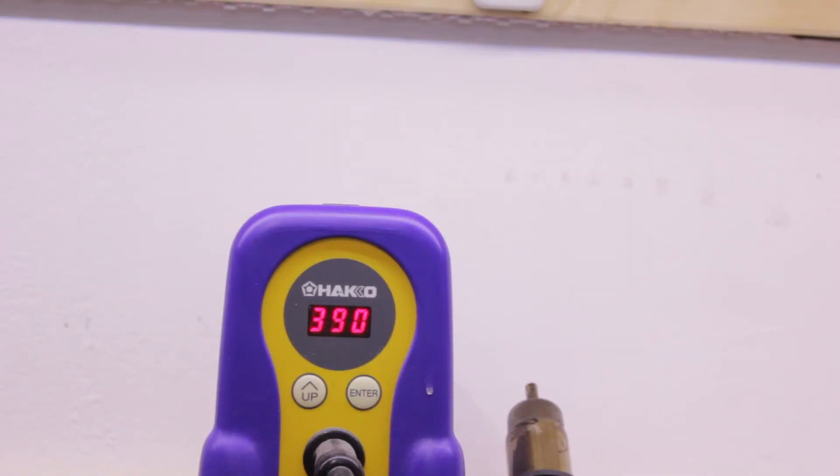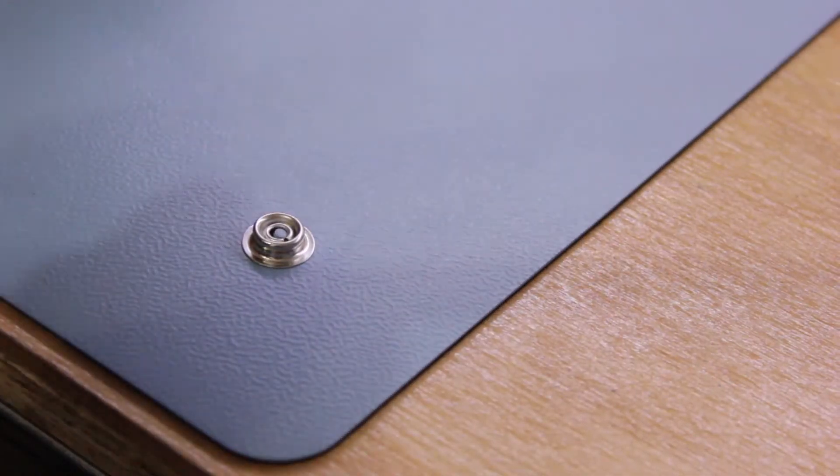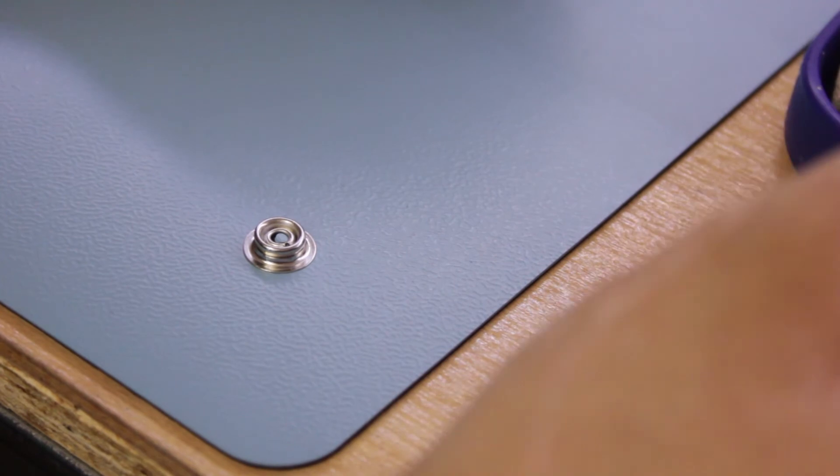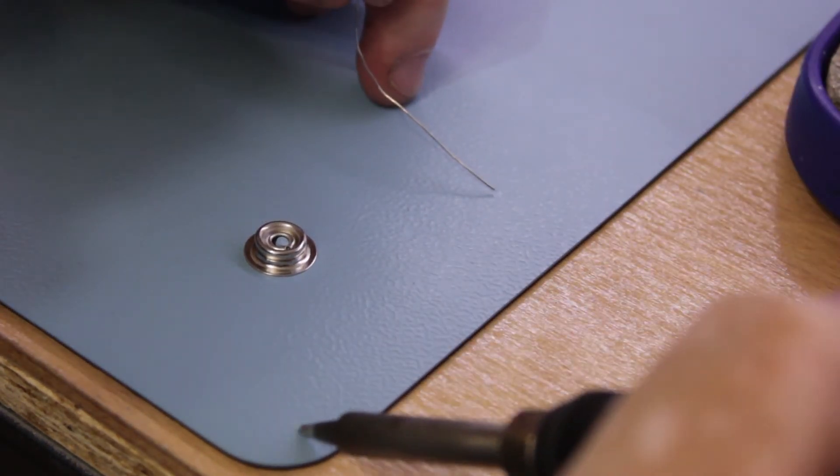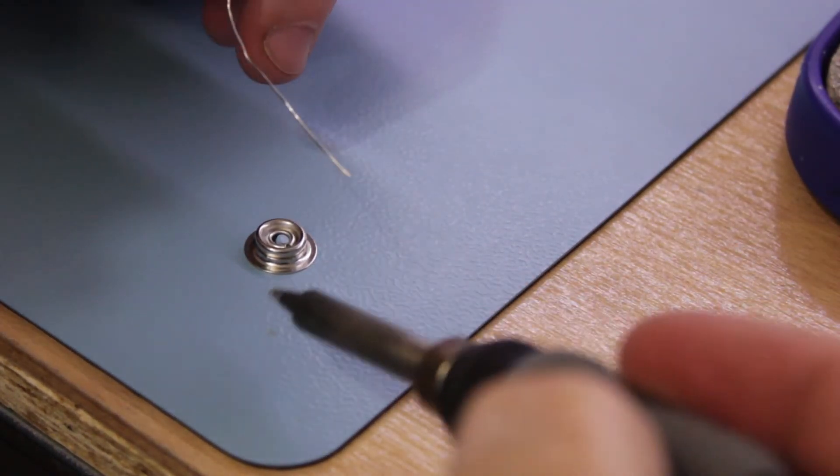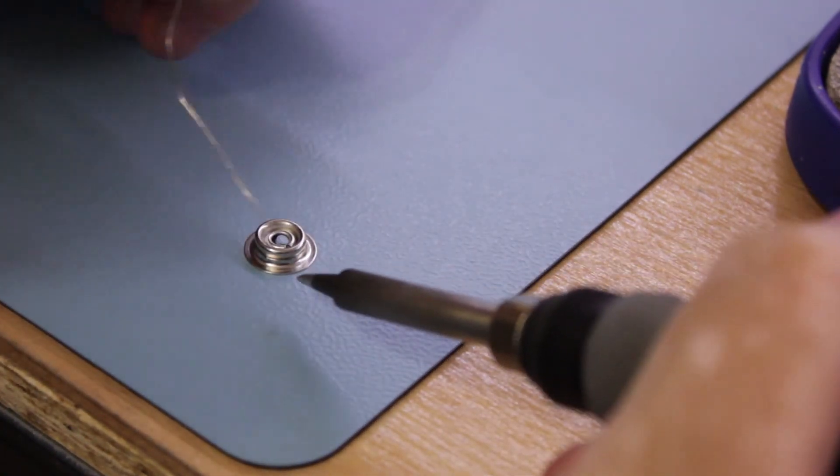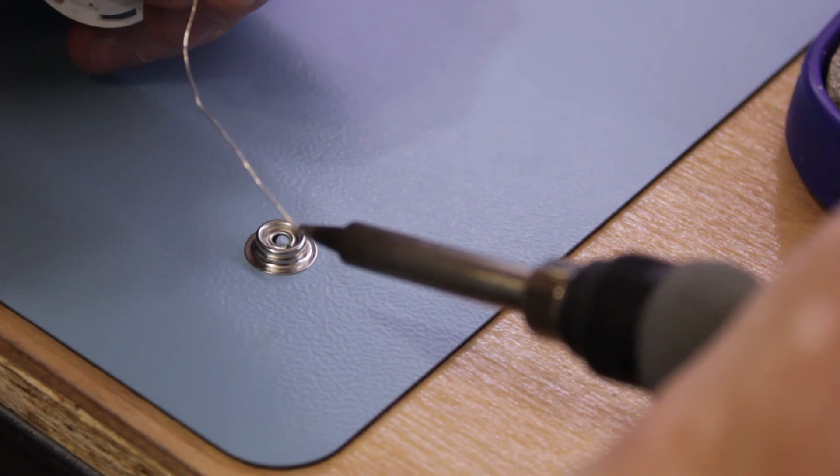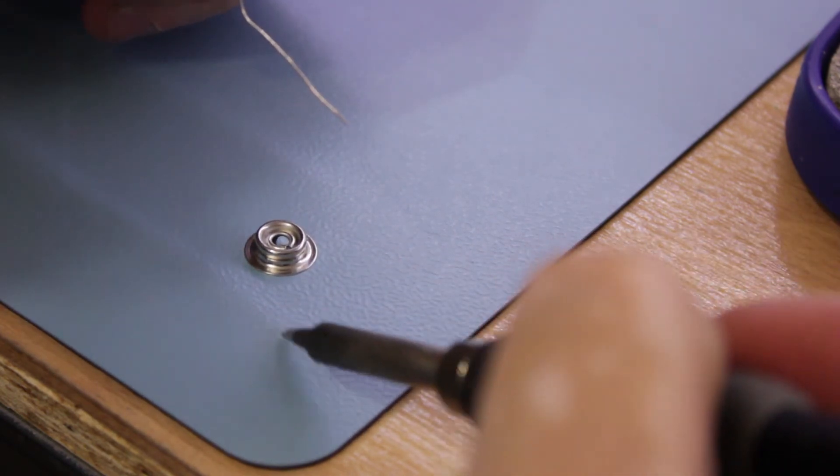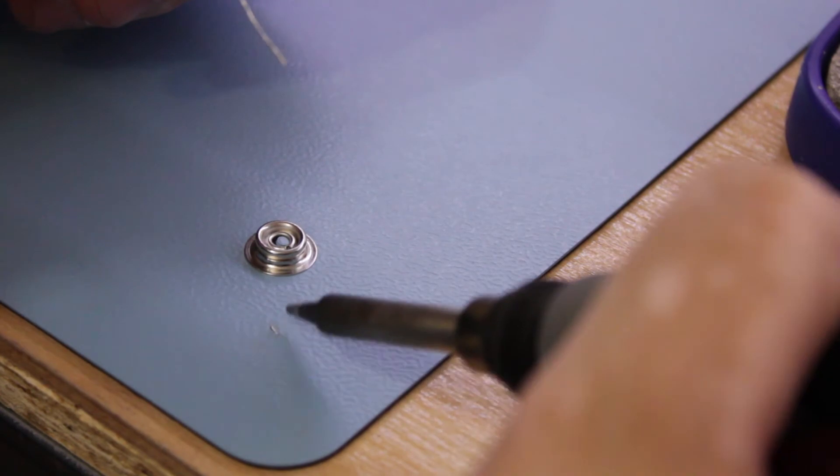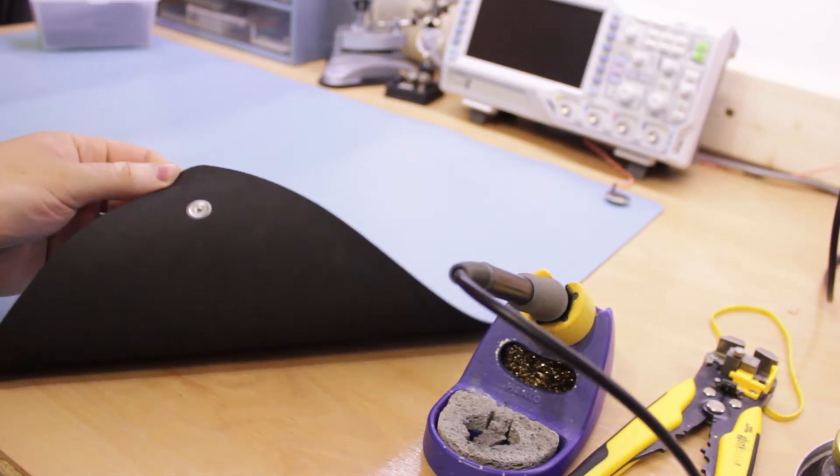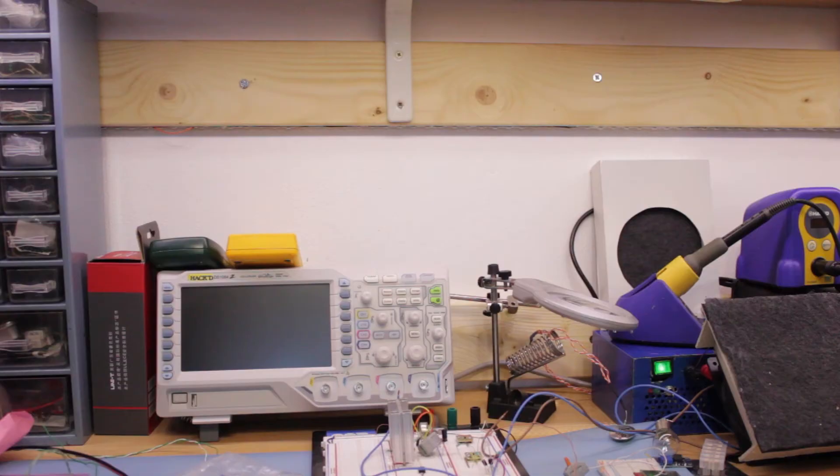I heat up my soldering iron to 390 degrees Celsius. The ESD mat is rated to withstand up to 400 degrees Celsius. I touch the mat with my soldering iron to see if it was resistant. Here you can see the top resistive layer and the bottom conductive layer of the ESD mat.